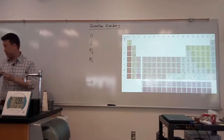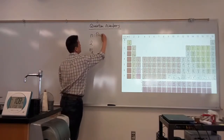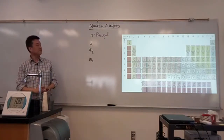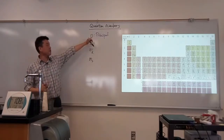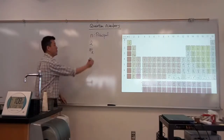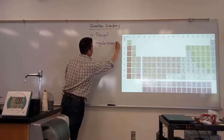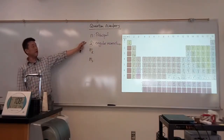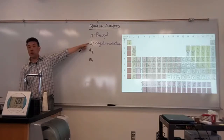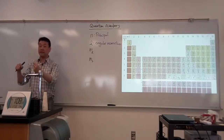Let me write down the names as a reminder. N is the principal quantum number — most closely associated with the energy level and how far away the electron is from the atom on average. L is the angular momentum quantum number, relating to the magnitude of the angular momentum. When you have the maximum value of L, that corresponds most closely to a circular orbit.